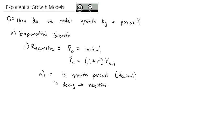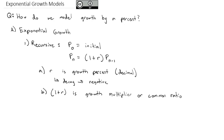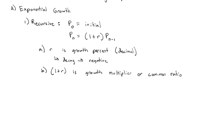So it would be 1 minus r if it was shrinking or decaying. That value in parentheses, 1 plus r, is called the growth multiplier or common ratio. Whatever 1 plus r is, we're multiplying by that amount each year, month, or day over and over again.